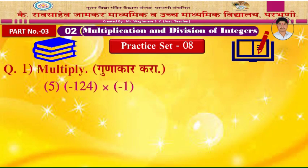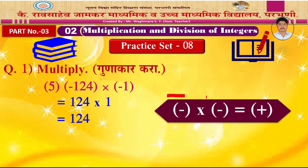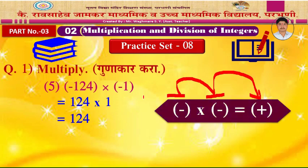Example 5: Minus 124 into minus 1. You may multiply without thinking about the sign — 124 into 1 is 124. But remember the rule: the first is negative and the second is also negative. Both numbers are negative, so the product is positive. Write the sign in the answer: positive 124, or simply 124.